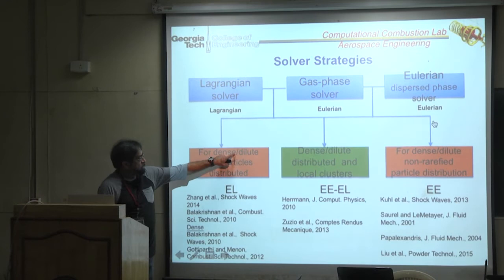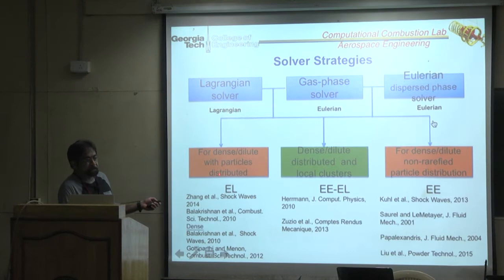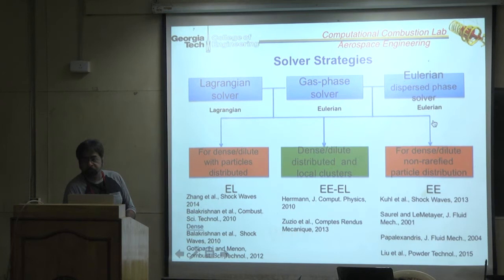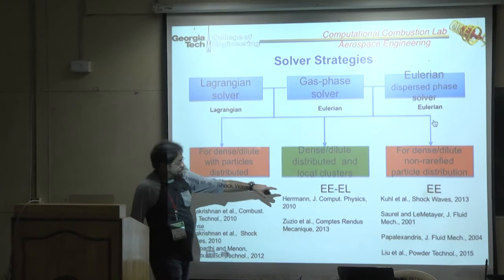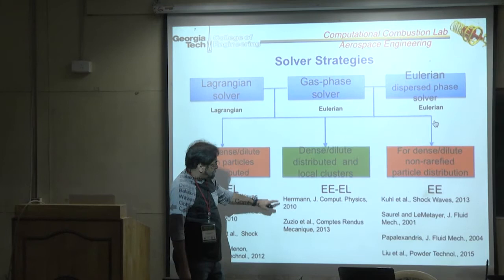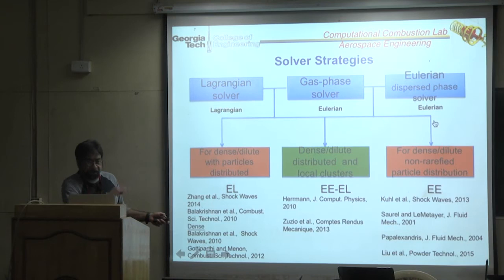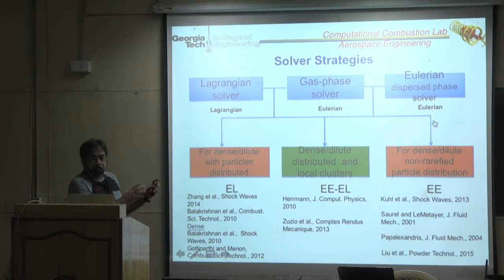A hybrid EEL (Eulerian-Eulerian-Lagrangian) approach is more useful: Eulerian-Eulerian in some regions, transitioning to Eulerian-Lagrangian when particle dispersion increases. We're not doing volume-of-fluid or tracking ligament surfaces — we're still tracking billions of point particles, just distributed initially as Eulerian-Eulerian and then transitioning to Eulerian-Lagrangian as they disperse.